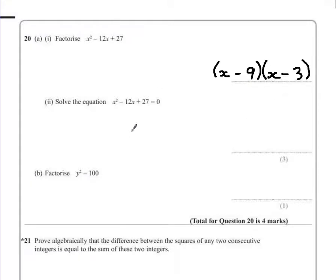Part 2 asks us to solve the equation x squared minus 12x plus 27 equals 0. Now because we factorize this, put it into two brackets, to make this equal to 0, each of these brackets has to become 0 as well.